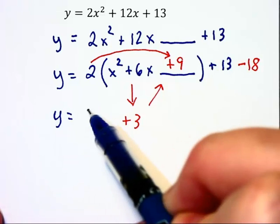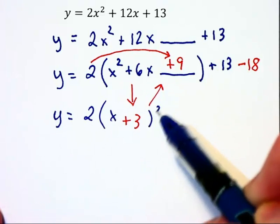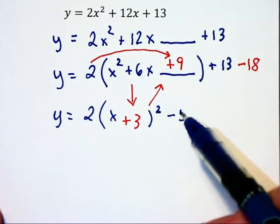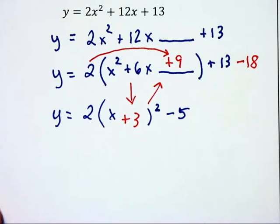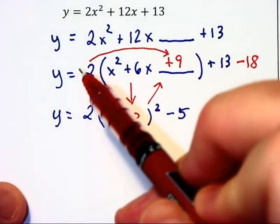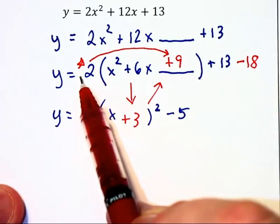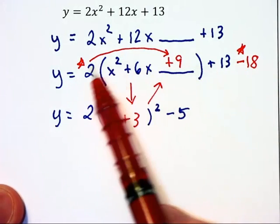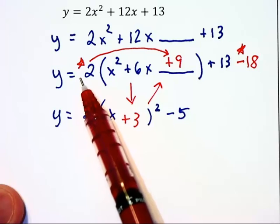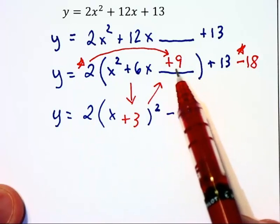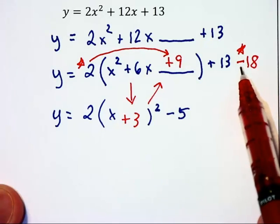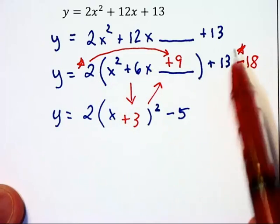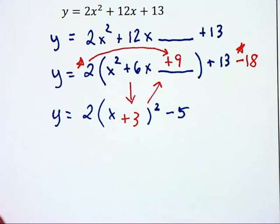We're going to have y equals 2 times x plus 3 quantity squared. And when I subtract 13 minus 18, I'm going to have negative 5. So you've got to be very careful here. Now let me give you one little comment here. Notice that this positive 2 out front is positive. And over here, we've got a negative 18. Those two numbers will be opposite in sign. Had this been a negative 2, that 9 would have represented really a negative 18 and we'd have to add 18 to compensate. And this would be a positive with a negative over there. So where I have these two stars, those numbers will always be opposite in sign.